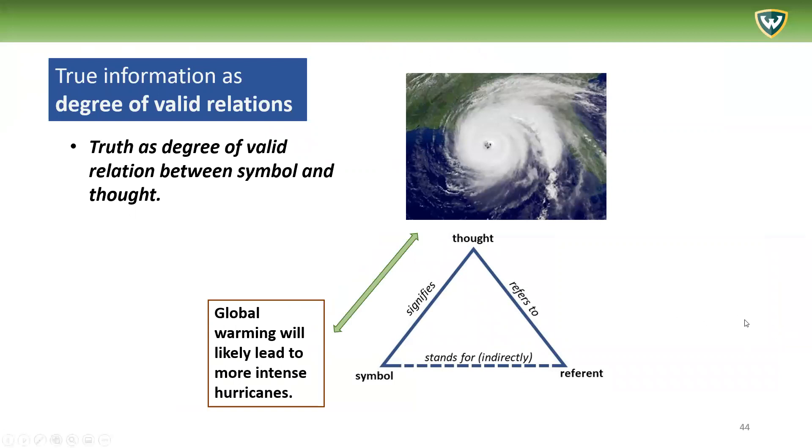I like to think of the semiotics triangle because it helps us think about true information and valid or correct relations. So when we're thinking about true information as degree of valid relations - now here I'm not going to explore this idea of degree very much, but everything is a matter of degree. So we can think of truth and true information as degree of valid relation, and you can think of valid as accurate or some other kind of term. A relation between symbol and thought, or sign and signified, or sign and mental concept.